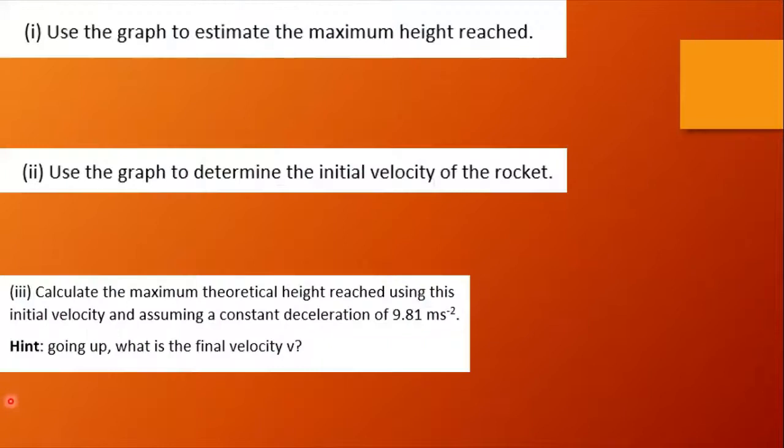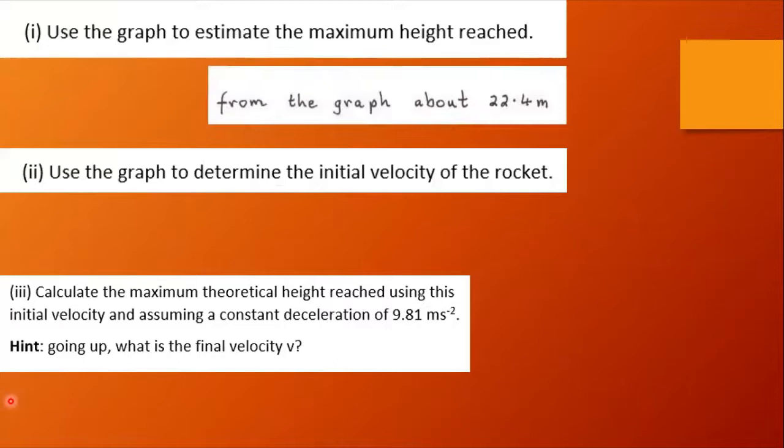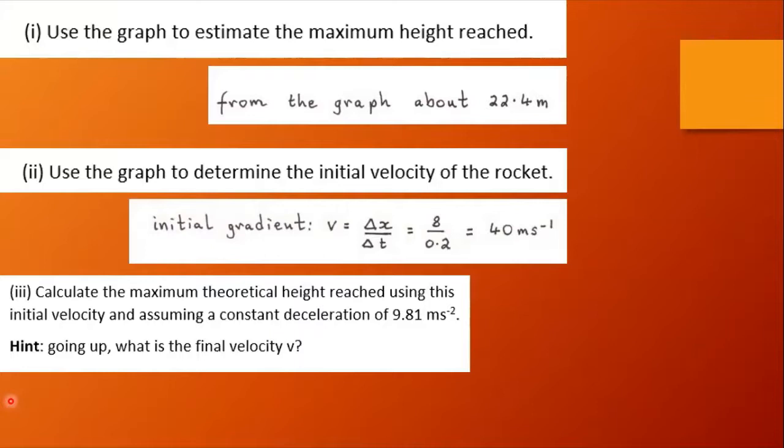So let's look at these questions. Use the graph to estimate the maximum height reached. From the graph it's about 22.4 meters. To determine for part two the initial velocity of the rocket, it's the gradient which is about 40 meters per second. And here we're asked to calculate the maximum theoretical height reached using this initial velocity and assuming a constant deceleration of 9.81 ms^-2.